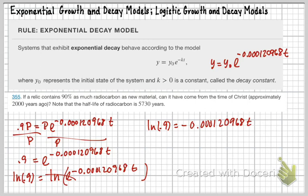I get the ln of 0.9 equals negative 0.000120968t. And then I'm just going to divide by that number negative 0.000120968. So, t equals ln of 0.9 over negative 0.000120968.